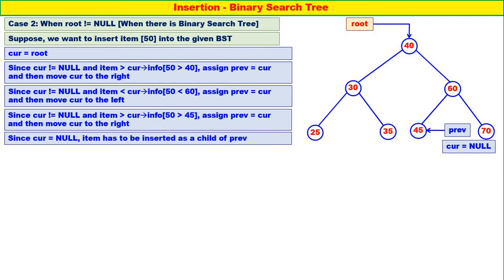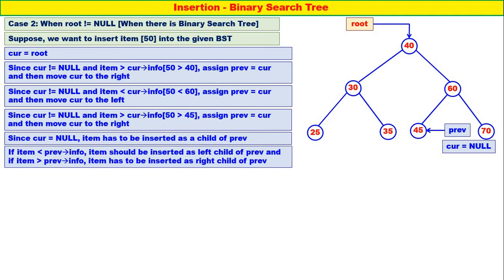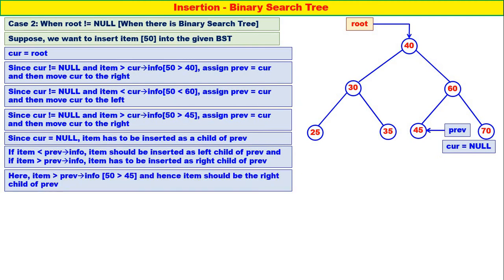Since kerr is equal to null, item has to be inserted as a child of priv — below 45, 50 has to be inserted. Very important: if item is less than priv of info, item should be inserted as left child of priv. And if item is greater than priv of info, item has to be inserted as right child of priv. Here in our case, item is greater than priv of info because 50 is greater than 45. Therefore item has to be inserted as a right child of priv.